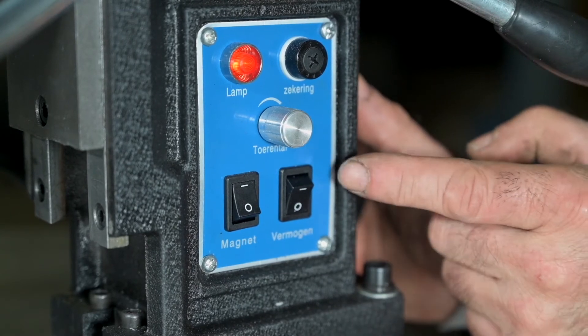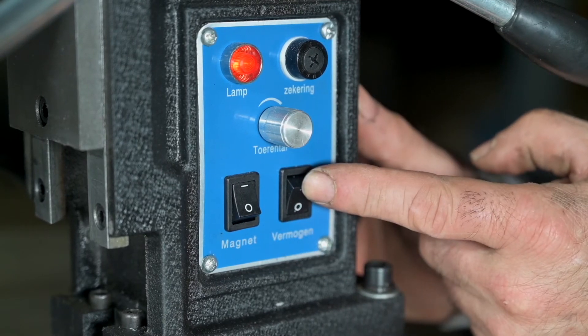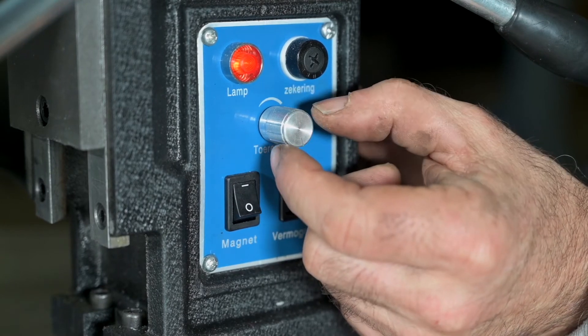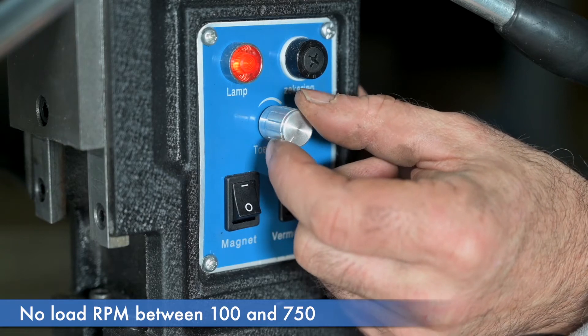And then you can start the motor with the other switch. You can't start the motor without locking the magnet or locking the foot. Here we go. And now you can rotate the RPMs between 100 and 750 RPMs.